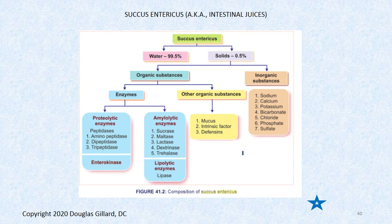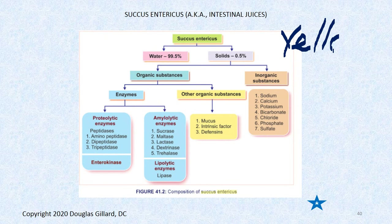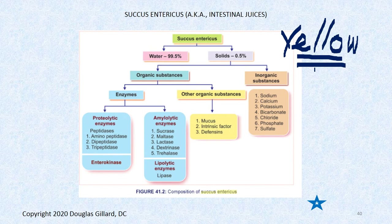Succus entericus, or intestinal juice, is yellow in color. If you're really sick with the stomach flu and get dry heaves, you'll squeeze this succus entericus out of the small bowel into the stomach and vomit it up — it's yellow. It contains mucus from Brunner's glands, pancreatic enzymes, and enterokinase among other components.